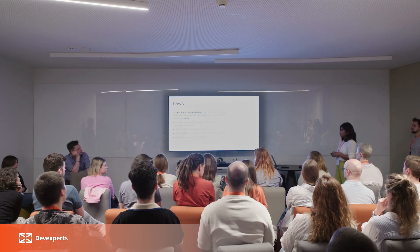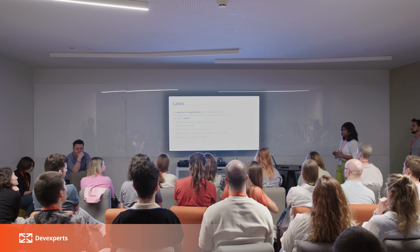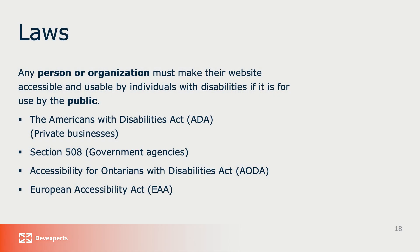Let's see some laws. If your content is available to the public, there are certain laws you must comply with, and each country has its own laws. In America, we have the Americans with Disabilities Act — if you have any private business and your content is available to the public, you must comply. If you are a government agency or providing services or products to the government, you must comply with Section 508. In Canada, there is the Accessibility for Ontarians with Disabilities Act. In Europe, there is the European Accessibility Act, and as per the EAA we must comply by 2030 — so we still have a few years to learn about accessibility.